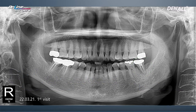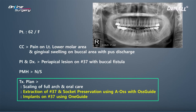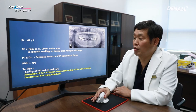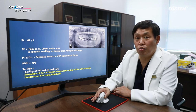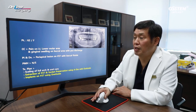Based on diagnosis, there's a periapical lesion as well as buccal fistula. After doing overall oral care, number 37 was extracted. Socket preservation was done. In this case, I used EOS and AusGuide.